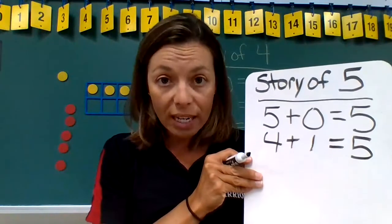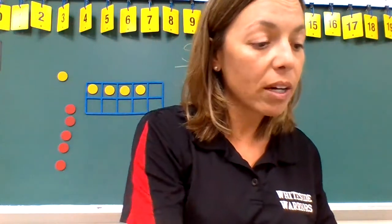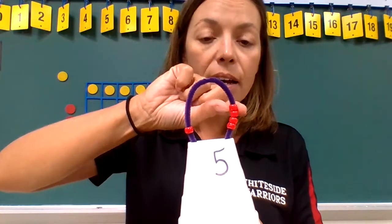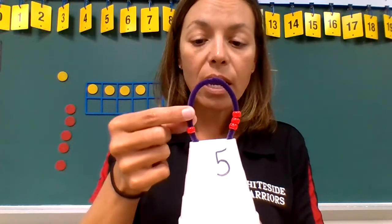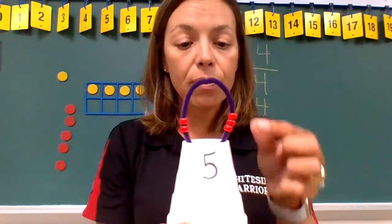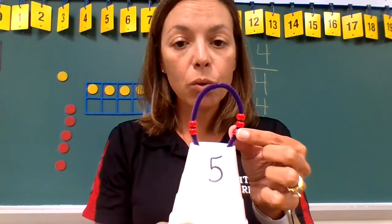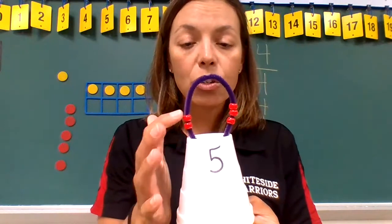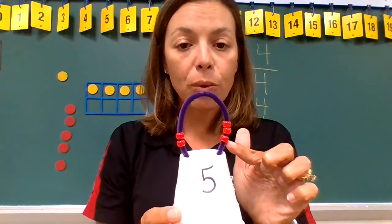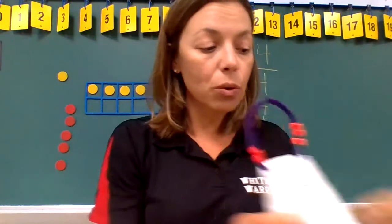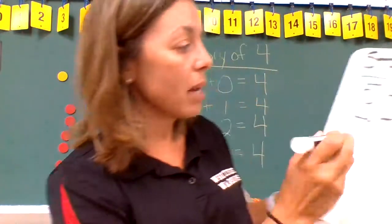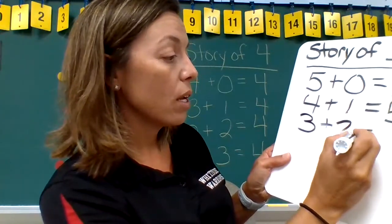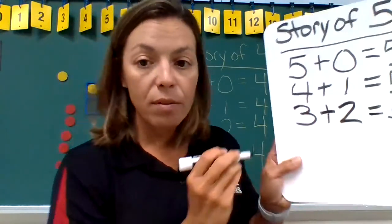Let's go back to our cup. It's time to slide another bead to the other side. Now we have one, two, three beads on this side and one, two on the other side, giving us three plus two as another way to make five. Three plus two equals five.